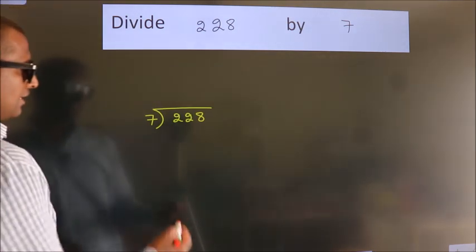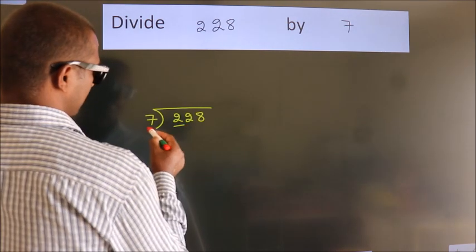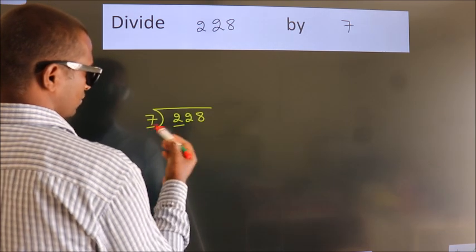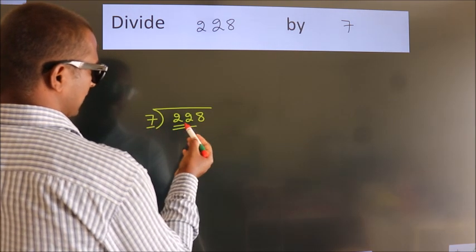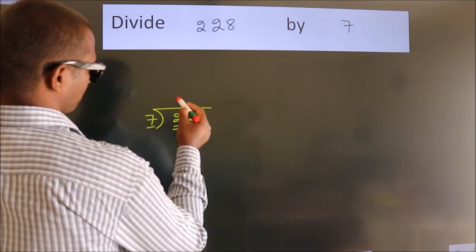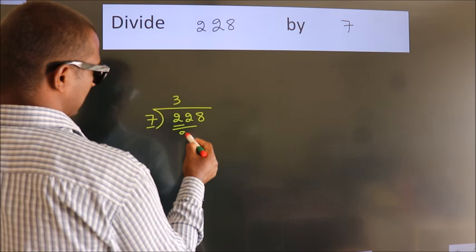Next. Here we have 2, here 7. 2 smaller than 7, so we should take 2 numbers, 22. A number close to 22 in 7 table is 7 threes, 21.